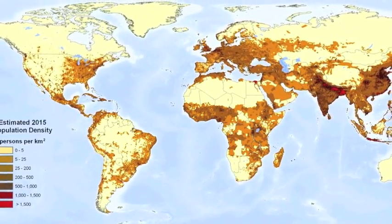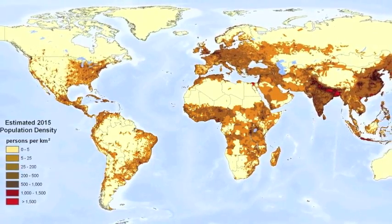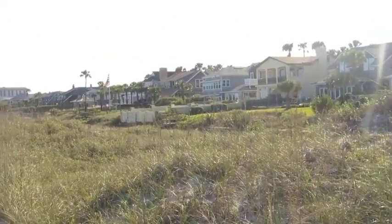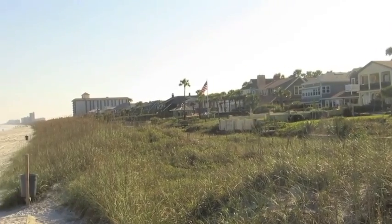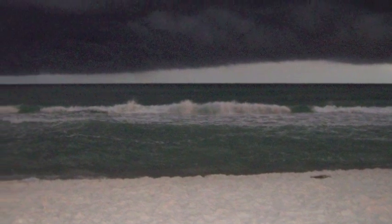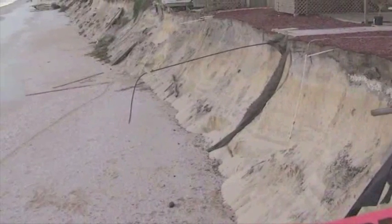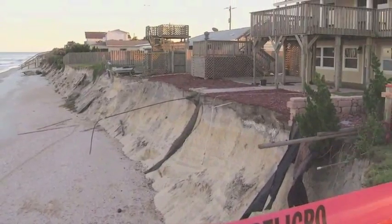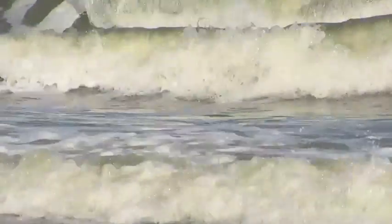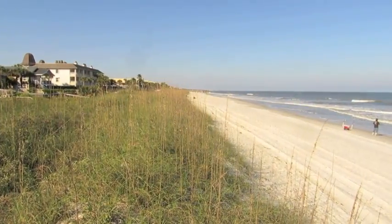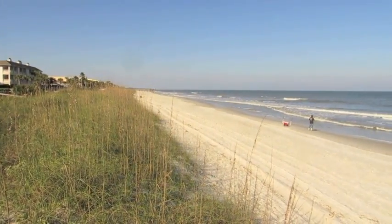Almost half of the world's population lives within 150 kilometers of the ocean, with 123.3 million people living on the coast in the United States alone. However, coastal systems are highly dynamic and constantly in flux. For human-dominated coastlines, processes such as erosion and accretion can be destructive. However, these same processes are vital to coastal and surrounding environments by providing nutrients and cycling resources for fragile dune systems.